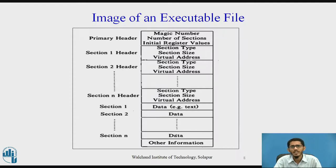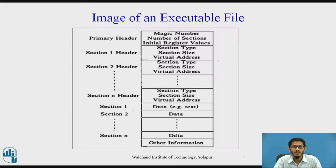The third part is the sections, which contain data such as text that are initially loaded in the process address space. The fourth is miscellaneous information, which may contain symbol tables and other data useful for debugging. Specific formats have evolved over the years, but all executable files contain a primary header with a magic number—a short integer that identifies the file as a load module and enables the kernel to distinguish its runtime characteristics.